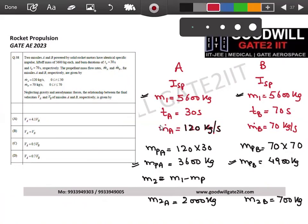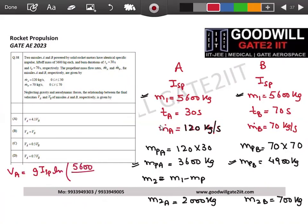And now you just need to calculate the velocity. You people know what is velocity formula. Velocity for rocket A is g into Isp ln of m1 divided by m2. Velocity for B is g into Isp ln of m1 divided by m2.